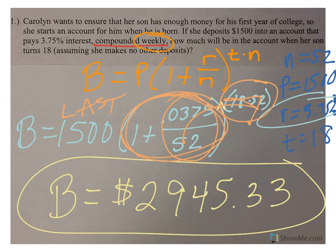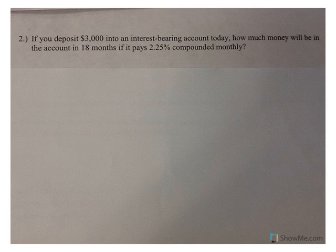And if you need help with a calculator, shoot me an email, and I'll see what I can do for you. Number two, if you deposit $3,000 into an interest-bearing account today, how much will be in the account in 18 months if it pays 2.25% compounded monthly?